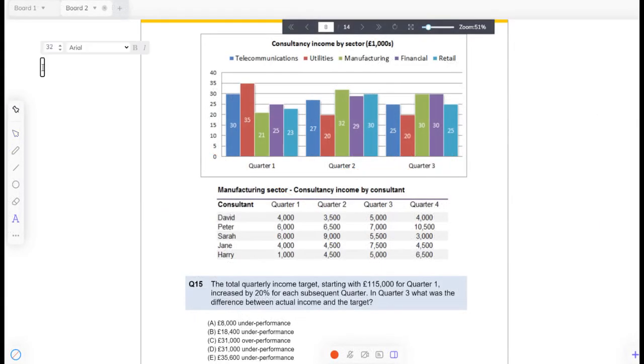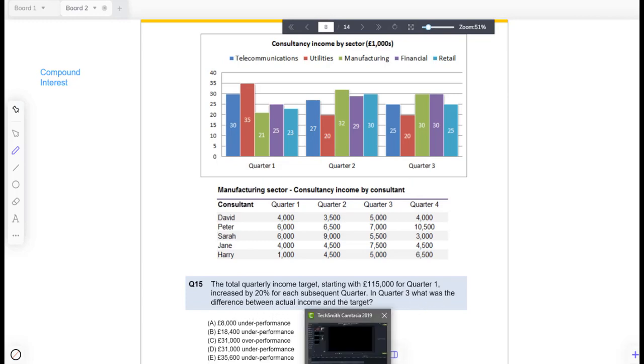Okay, so here's a little question where we can make use of our percentages compound interest formula. Question number 15: the total quarterly income target starting with £115,000 for quarter one increased by 20% for each subsequent quarter. In quarter three, what was the difference between the actual income and the target income? We can see up here that this is consultancy income by sector.